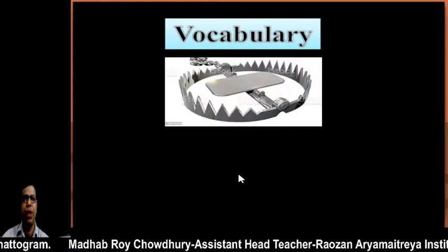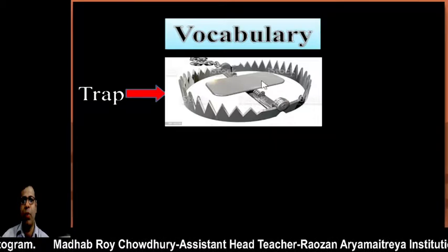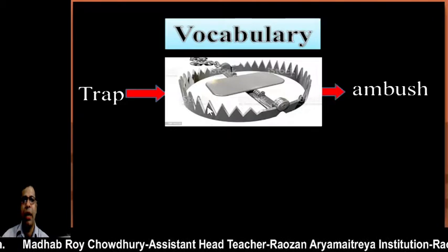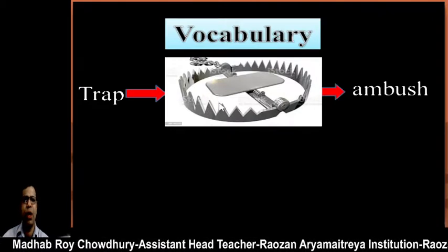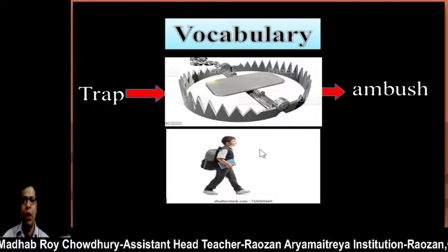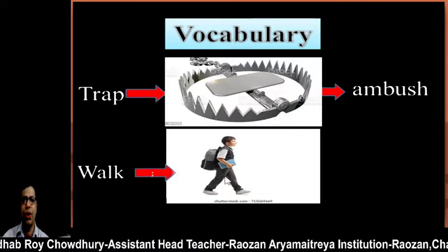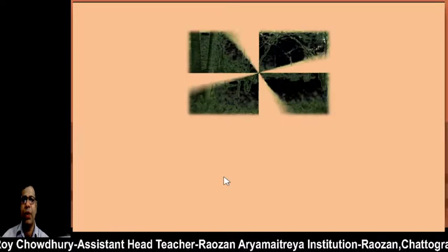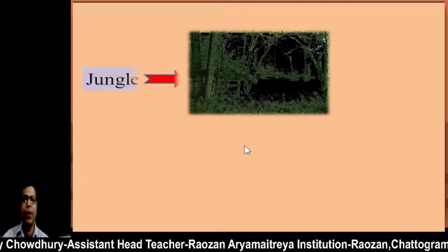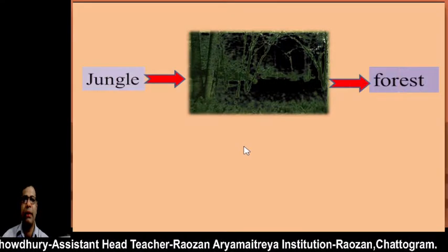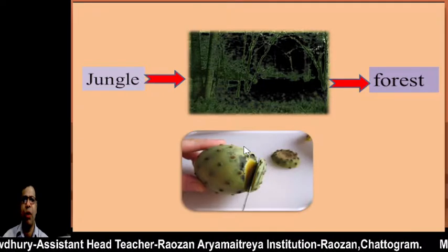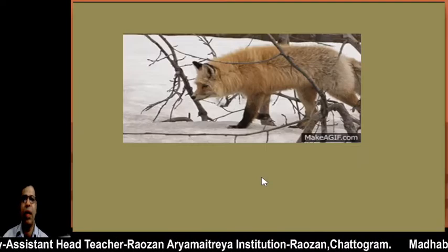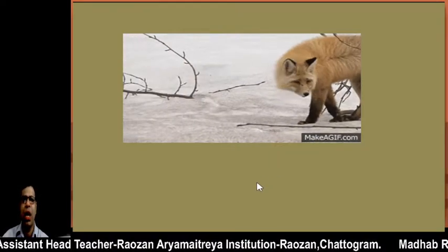First, we will introduce some vocabulary. The first picture is called a trap, and another synonym for the word trap is ambush. Next, a student is walking — this is called walk, and synonyms of walk are march or stride. The next picture shows a jungle, and another name for jungle is forest. Finally, scuttle means to disconnect or scatter.